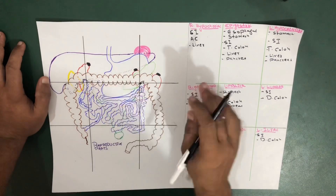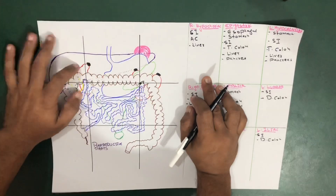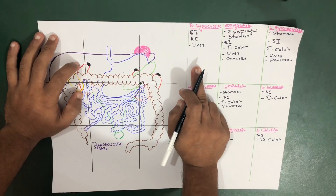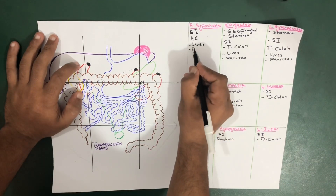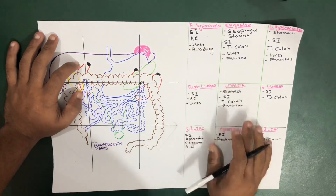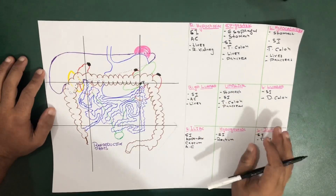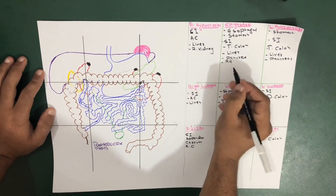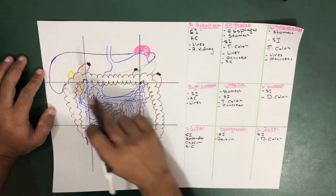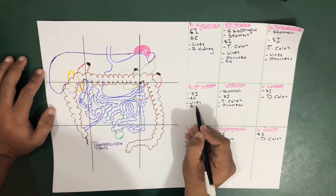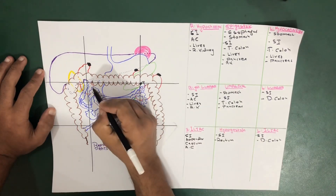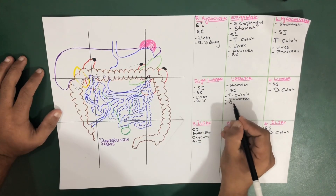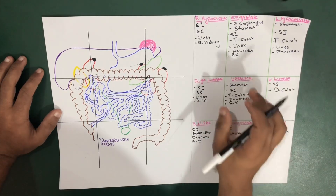The right kidney occupies the right hypochondriac region. The right kidney also occupies the epigastric region and is also present in the umbilical region — I've drawn it in a dotted red line. So the right kidney occupies four regions in total.